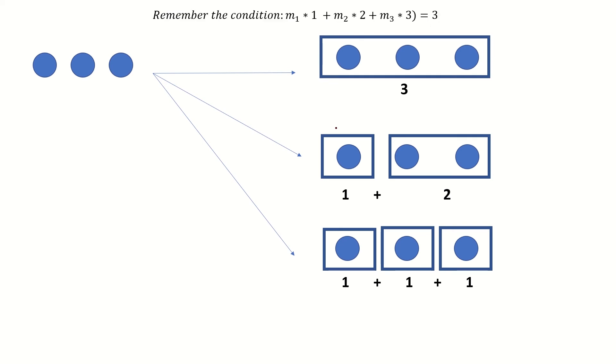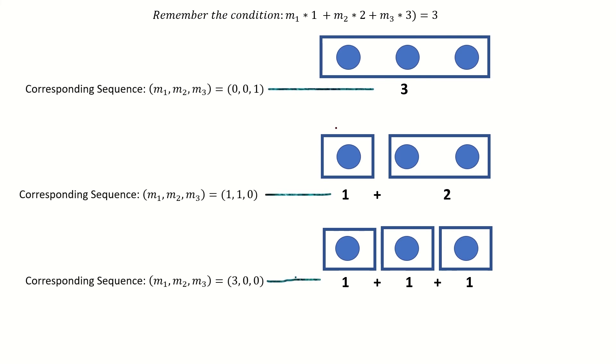Now for each of these partitions, m1 is the number of times 1 appears in the partition, m2 tells us how many times 2 appears in the partition, and m3 tells us how many times 3 appears in the partition. Each integer partition of 3 maps to a unique sequence of integers m1 through m3 that describes the occurrences of the integers 1 through 3 in that partition.